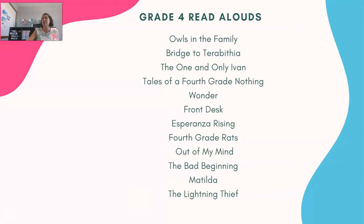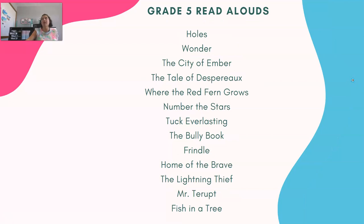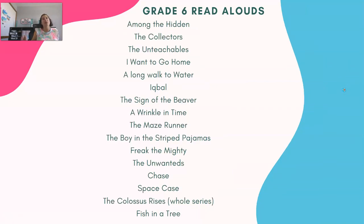Grade 4 has very similar context — Bridge to Terabithia, The One and Only Ivan — you can reach up by one grade but stay within that range. The Lightning Thief covers Greek myths, which ties into grade 4 social studies — a nice double dip. For grade 5, you'll see Wonder, Holes — which I love — and I start diving into science fiction with City of Ember. I also address world issues with Number of the Stars, and I often start the year with something like The Bully Book or Mr. Terupt to set the classroom community tone.